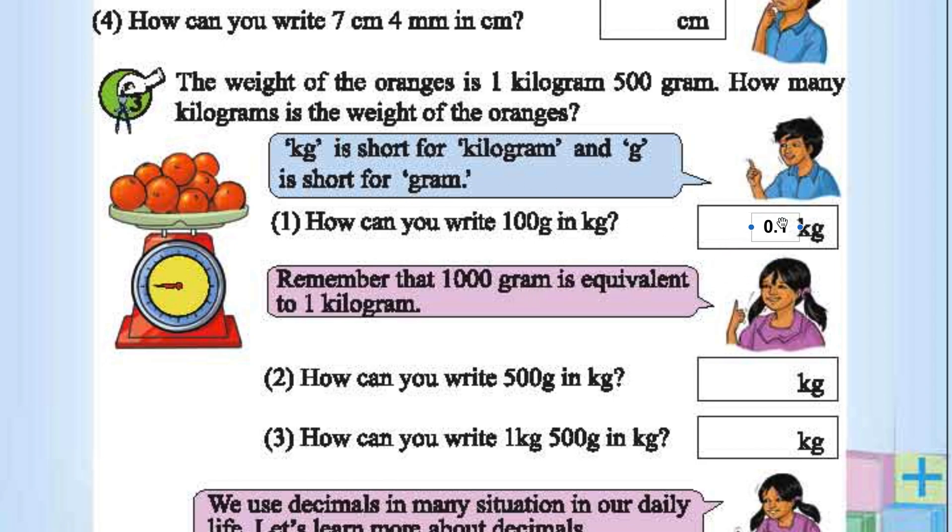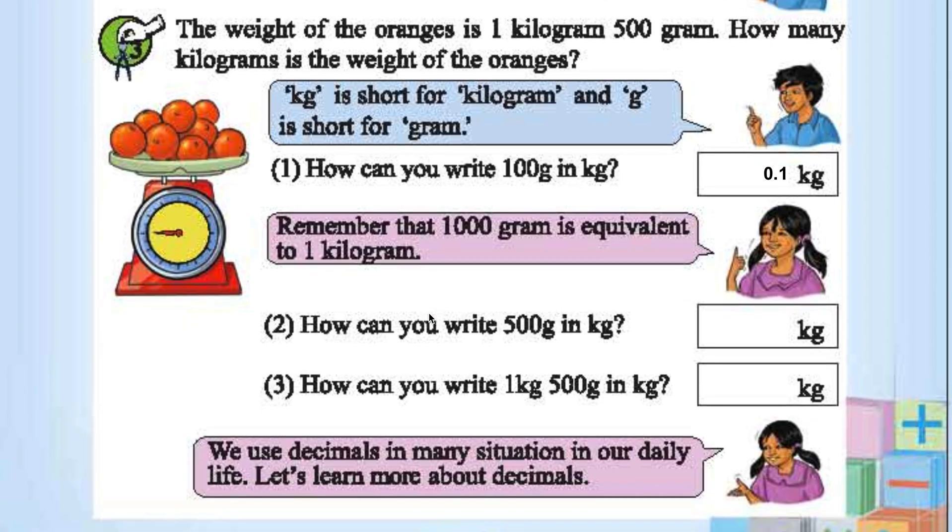Since 1 kg is 1000 grams, it will be 100 by 1000. So 1 by 10. 1 by 10 is 0.1 kg. Remember that 1000 grams is equivalent to 1 kg. That we already know.